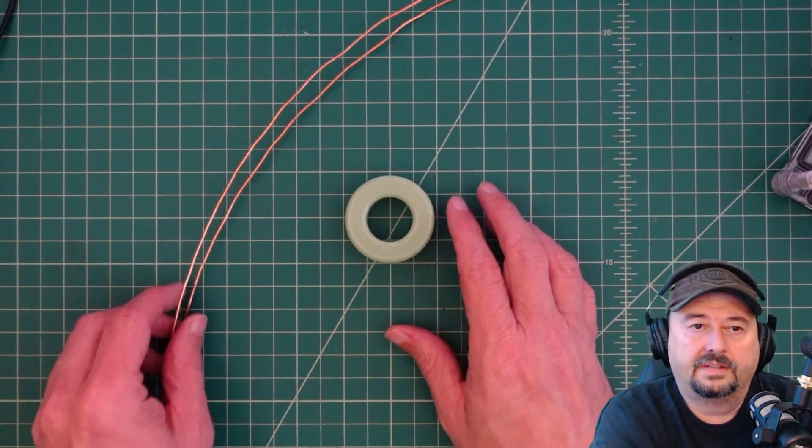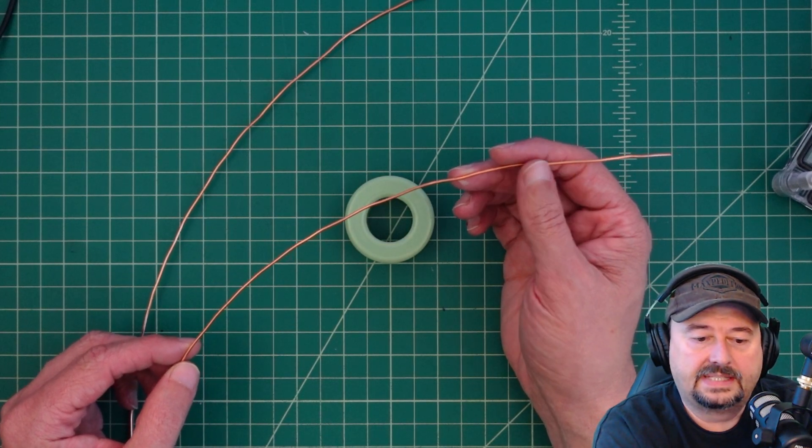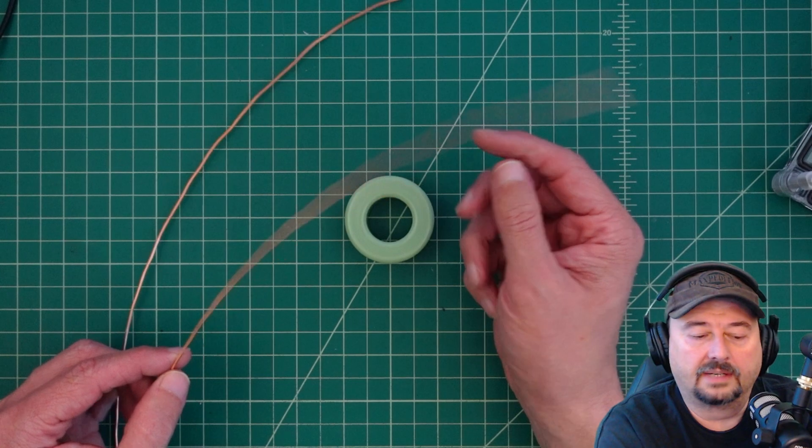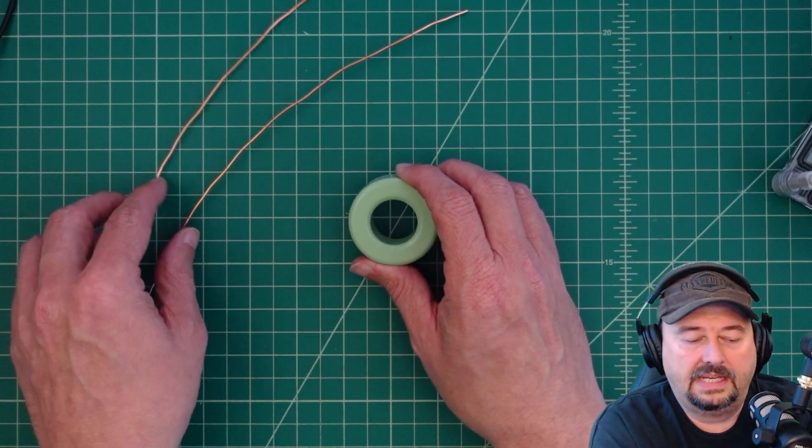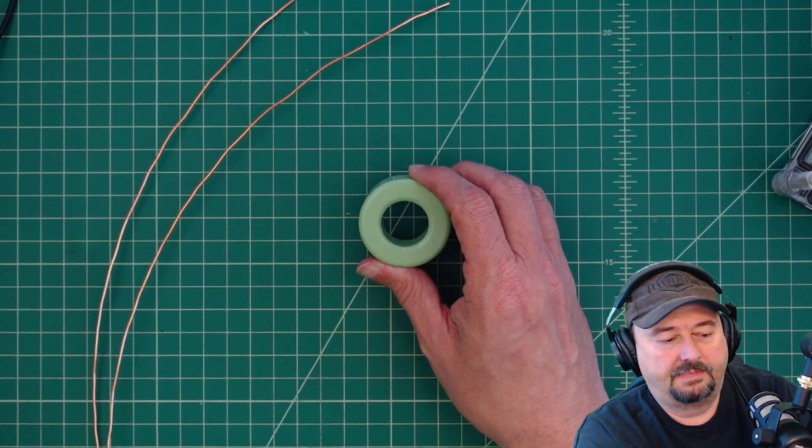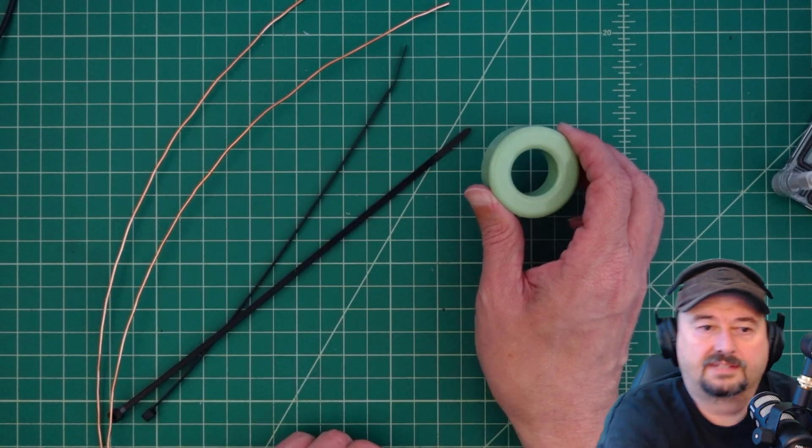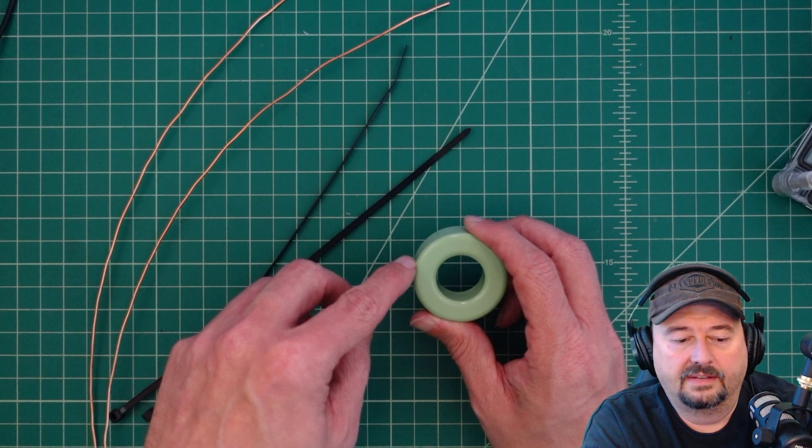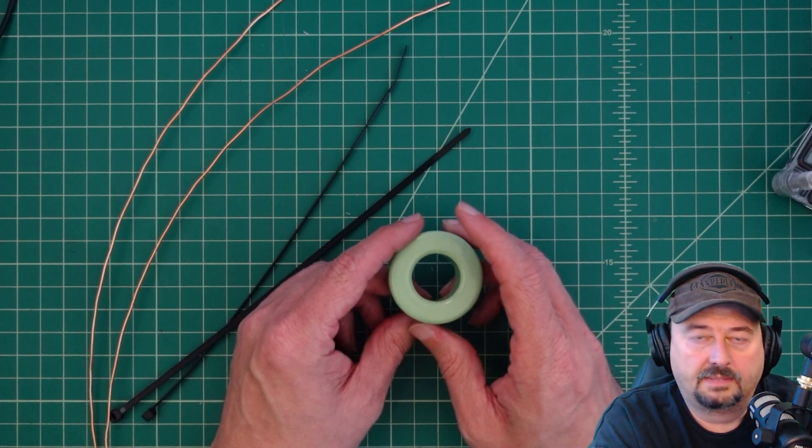We're going to wind this core with this magnet wire. This is 16-gauge enamel-coated copper solid core wire. What I do is I use a set of zip ties. Now, I know these are monster-sized, but that's what I had within arm's reach. I'm going to use that to anchor this wire down, and then I'm just going to go ahead and wind it up.